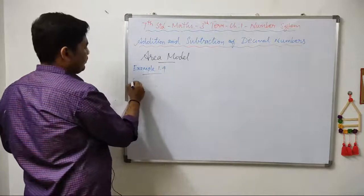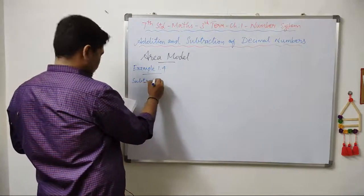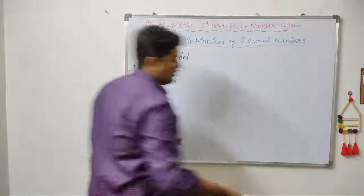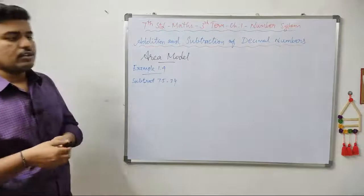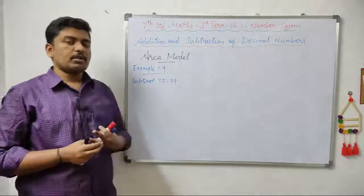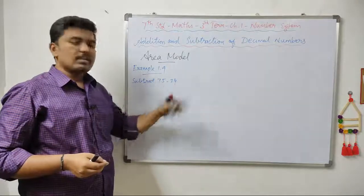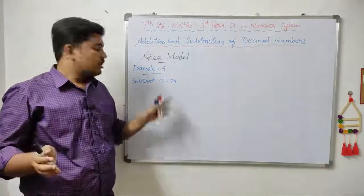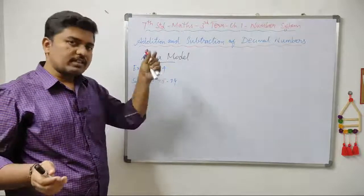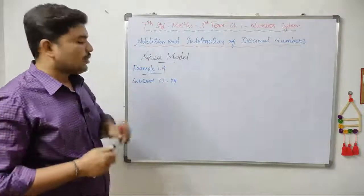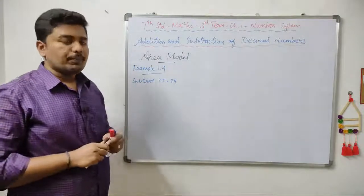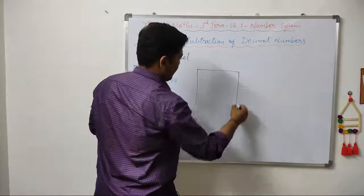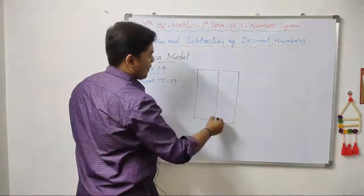Example 1.9: Subtract 7.5 minus 3.4. So 7.5 minus 3.4 is the question. It is very easy. First, for the subtraction, the number is 7.5. We draw the square and area drop. 7 whole squares and 5 is a 1 by 10th strip. The square represents 10.5 which is dropped.